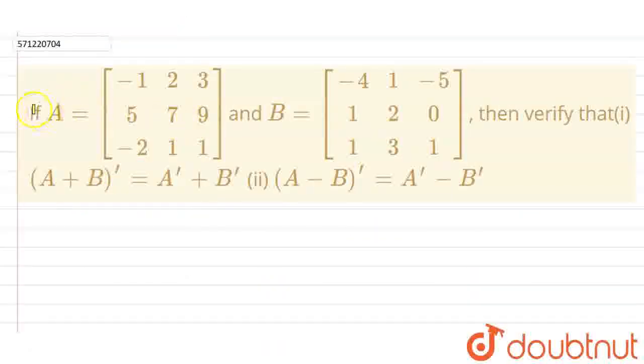So the question is, if A equals this matrix and B equals this matrix, then verify that first part is saying that A plus B whole transpose equals A transpose plus B transpose. And second part is A minus B whole transpose equals A transpose minus B transpose.